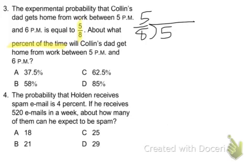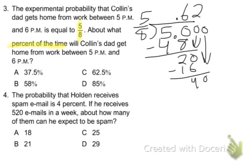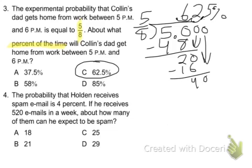So we're going to drop the 5 in. 8 goes into 5 — it doesn't — so add a decimal. 8 goes into 50 six times: 48. Minus and get 2. We can bring down another 0. 8 goes into 20 twice — that's 16 — minus and get 4. We can bring down another 0. 8 goes into 40 five times. So .625 — that's a decimal — and we need to change that to a percent. Simply move the decimal point over twice, and so we get 62.5%. The answer to number 3 is C.